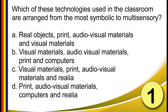Number 1. Which of these technologies used in the classroom are arranged from the most symbolic to multi-sensory? A. Real objects, print, audio-visual materials and visual materials. B. Visual materials, audio-visual materials, print and computers. C. Visual materials, print, audio-visual materials and realia. D. Print, audio-visual materials, computers and realia.